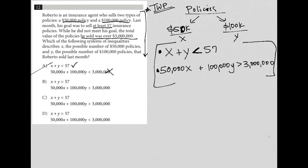Answer choice B: X plus Y greater than 57. That's not true. Choice C: X plus Y is less than 57, so that's good, and greater than 3 million, perfect. Choice C must be the correct answer. I always try to look at all of the answers, and choice D is wrong because we have X plus Y is greater than 57, and that's not the case. So choice C is the best answer. Translate word problem.